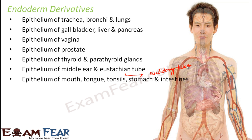This part is very crucial from an examination point of view, as questions are often asked about derivatives of the various germ layers — for example, 'From where is the epithelium of the liver derived?' To summarize: mesoderm forms most vital organs like heart, kidneys, ureters, and blood vessels. Endoderm forms the epithelium of all internal organs. Ectoderm forms the outer layer of outer organs.